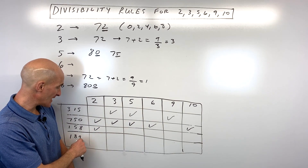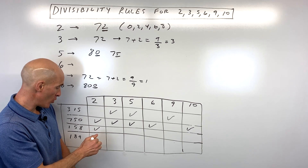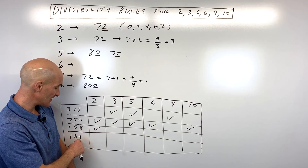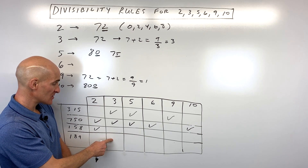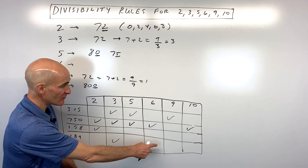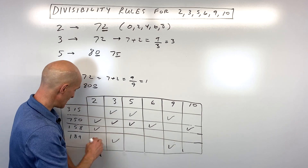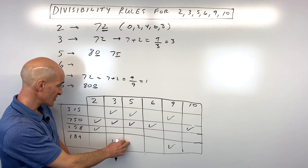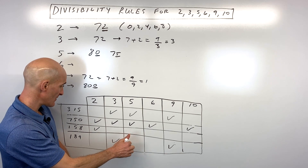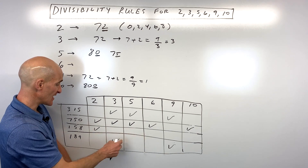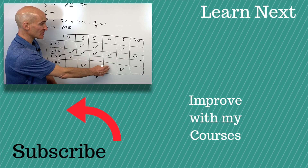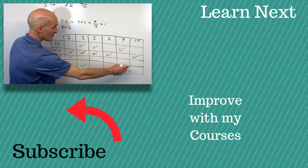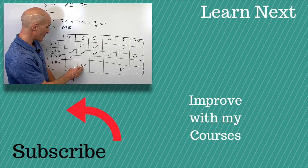The last example, 189. Is it divisible by 2? No, because it doesn't end in an even number. Is it divisible by 3? The digits add up to 18, so yes, it is divisible by 3. 18 is also divisible by 9, so the number is divisible by 9. Does it end in a 0 or a 5? No, so it's not divisible by 5. It's not divisible by 2 and 3, so it's not divisible by 6. Does it end in a 0? No, so it's not divisible by 10. So in this case, it's just divisible by 3 and 9.